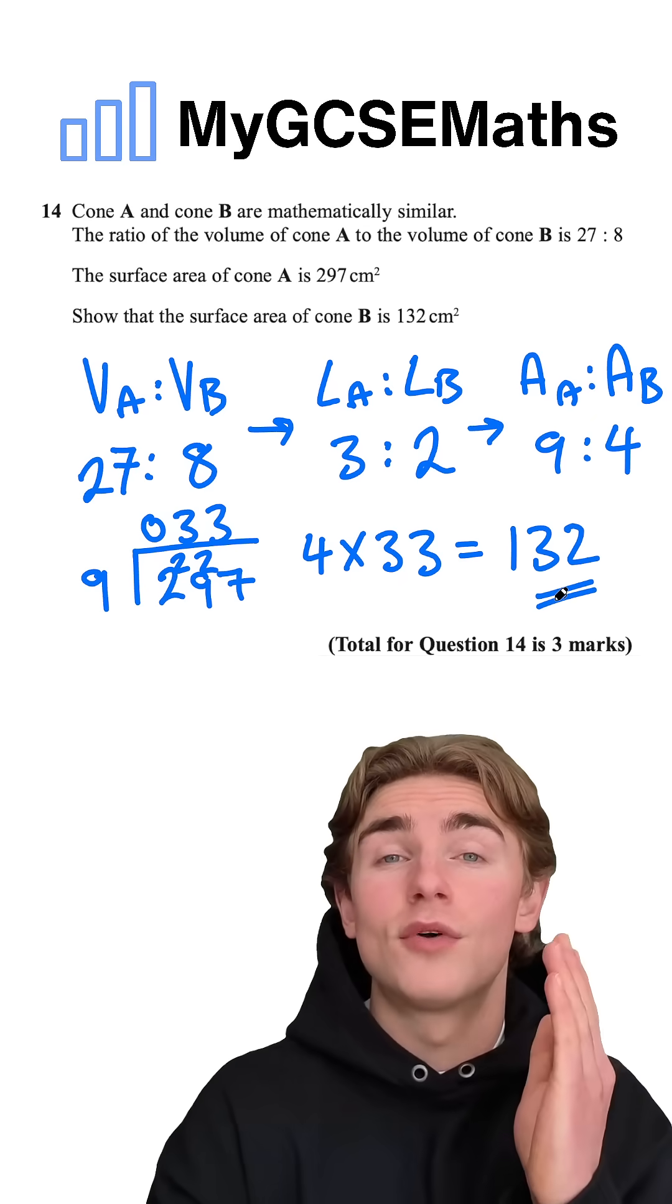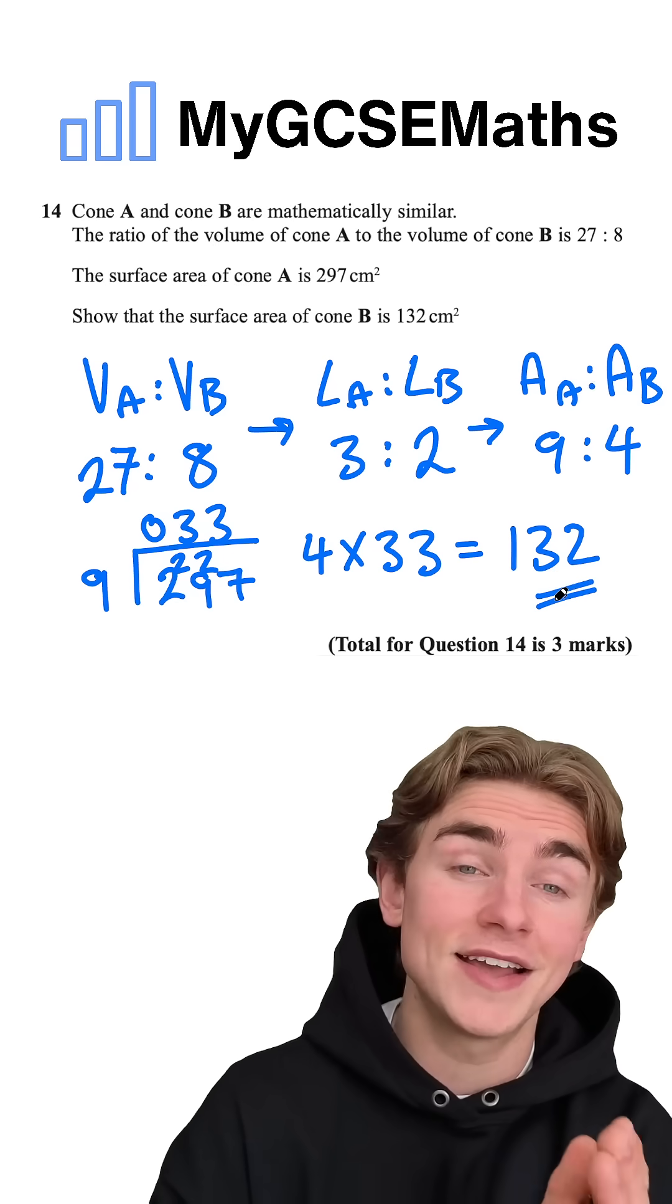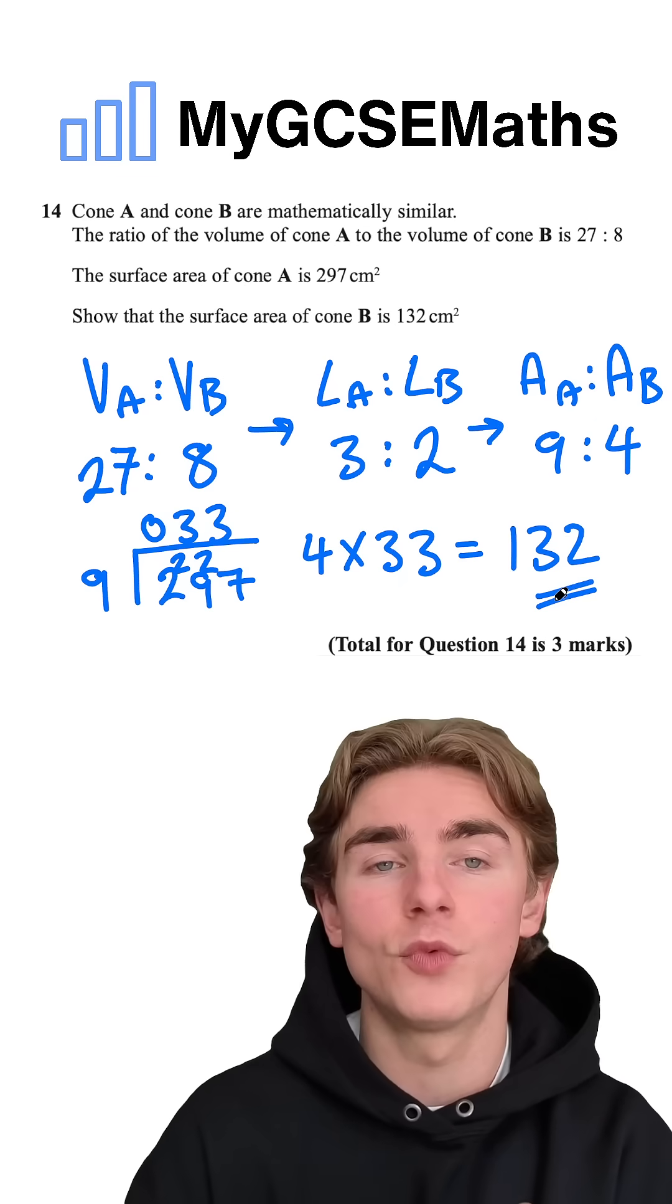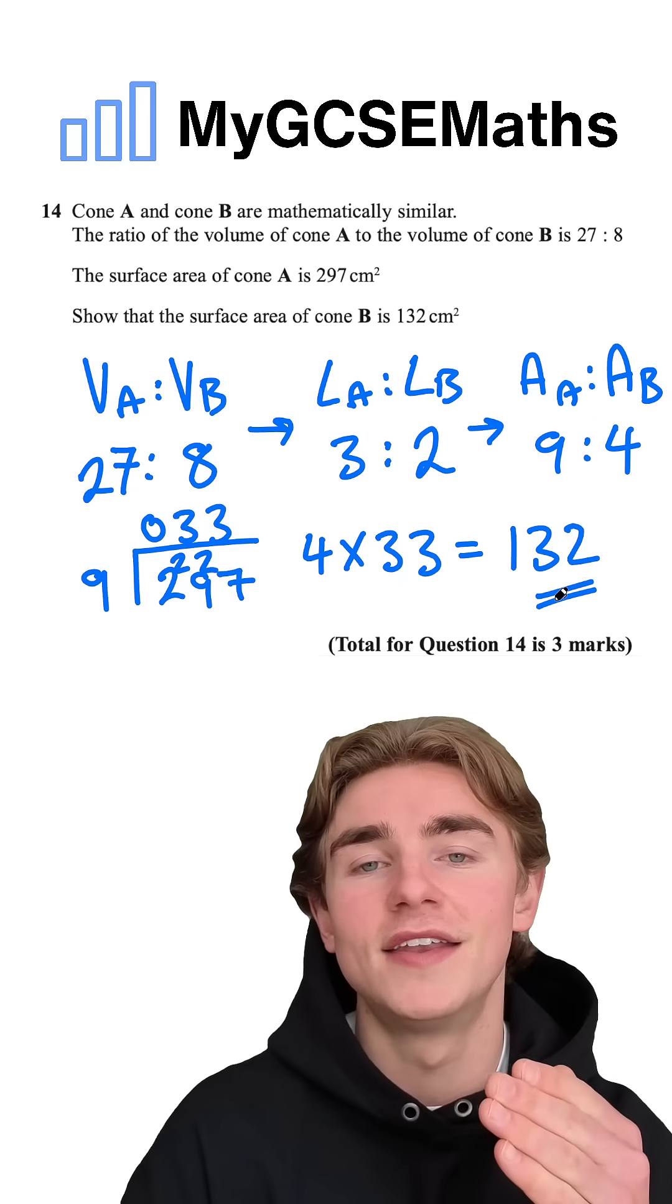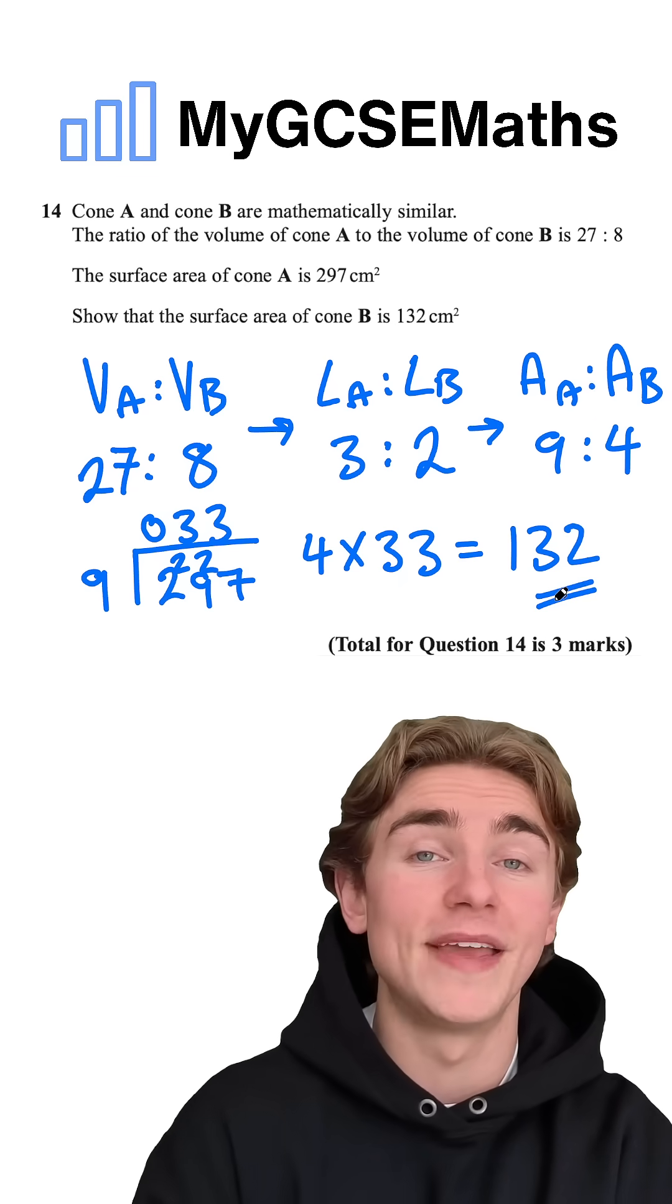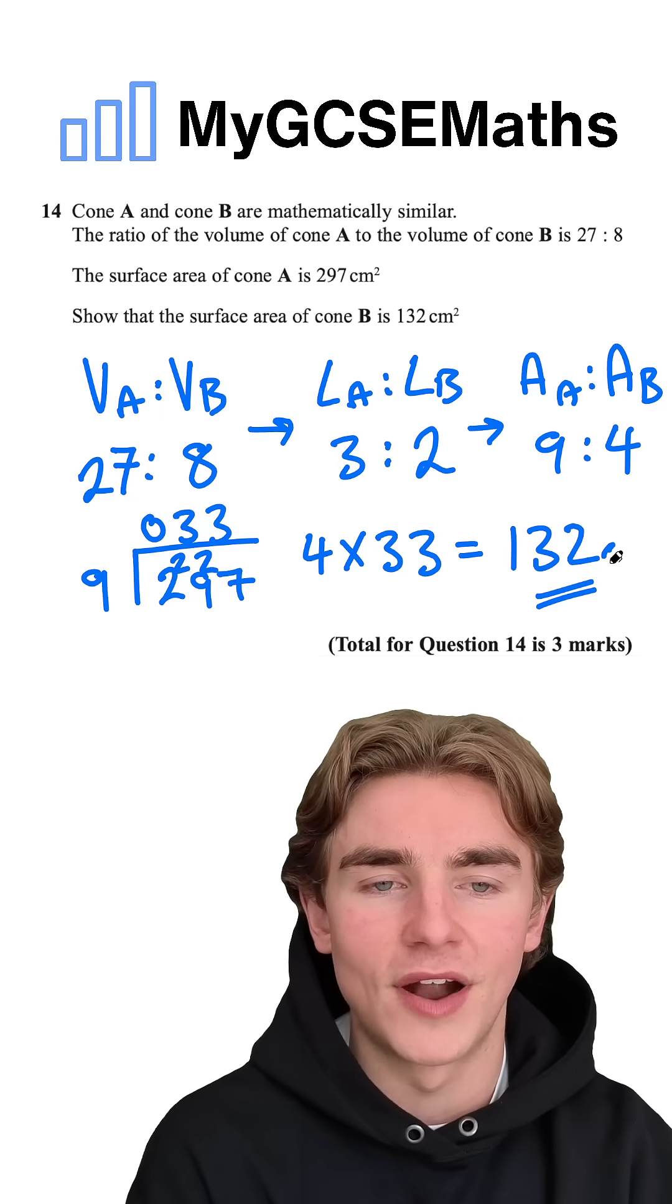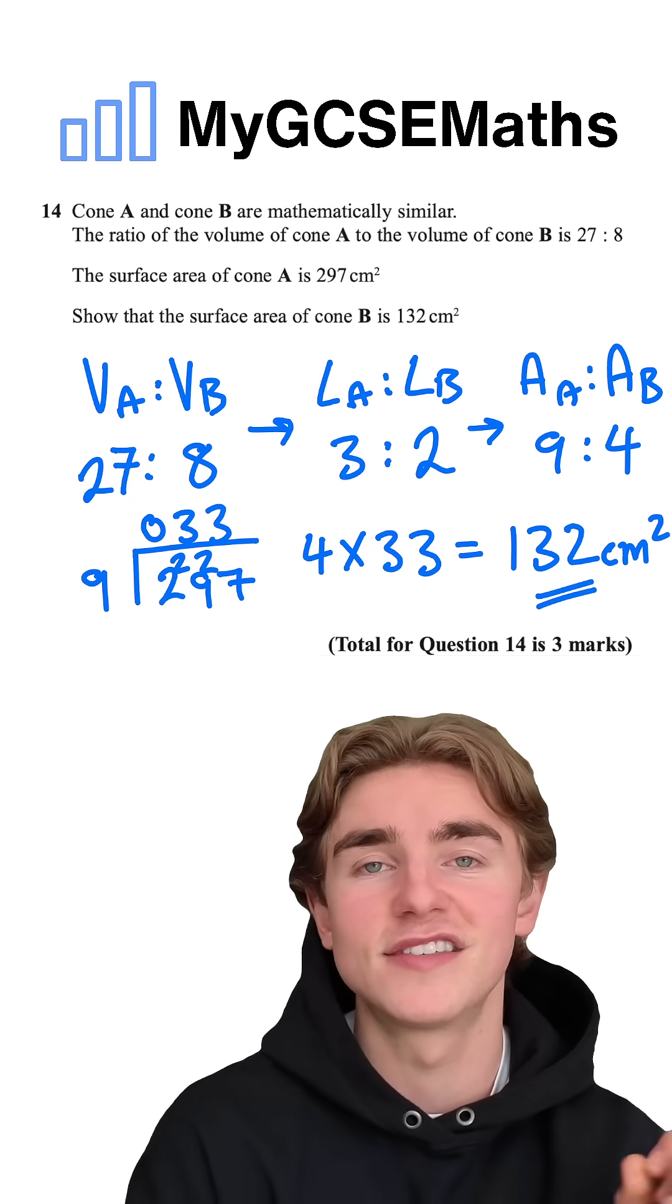What did we do? We used our ratio in volumes to go to our ratio in lengths, and our ratio in lengths to go to our ratio in areas. Once we had that, we could use our ratio to find the surface area of cone B, and luckily it did turn out as 132 centimeters squared.